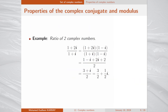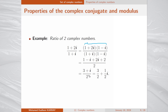Let's apply this method to calculate the ratio of two complex numbers. We multiply by the complex conjugate of the denominator on both sides of the fraction. In this product, the denominator gives the modulus of 1 plus i squared, which equals 2. For the numerator, we use distributivity. We finally get 3 plus i divided by 2, which is the final algebraic form of the complex number.